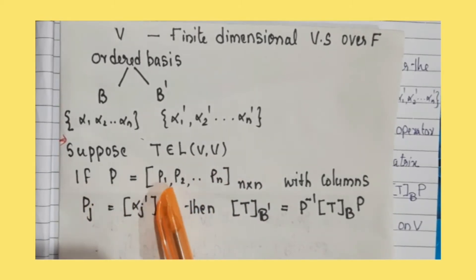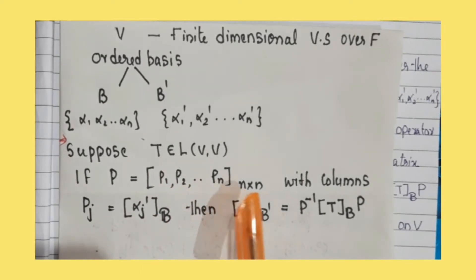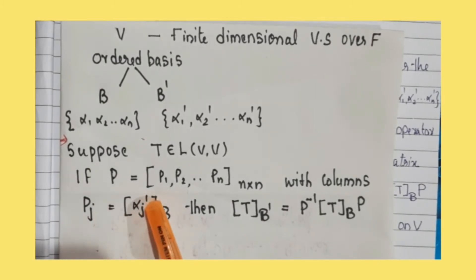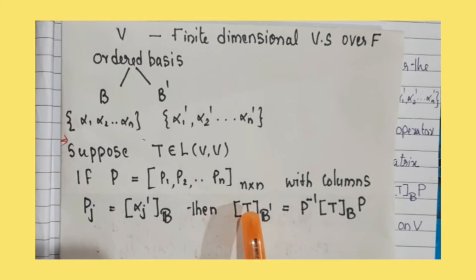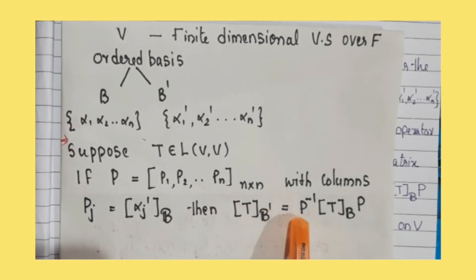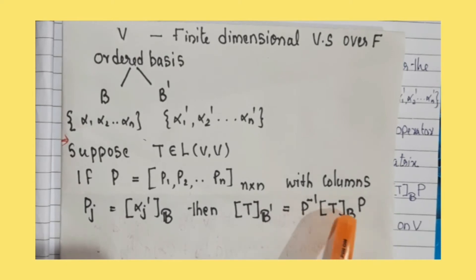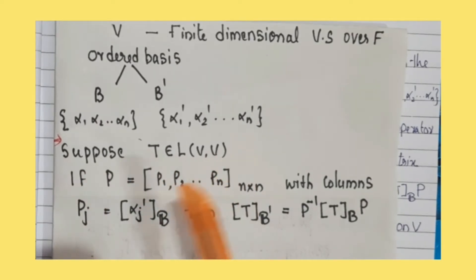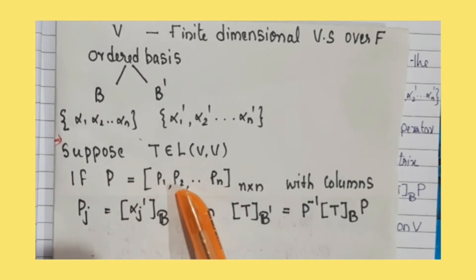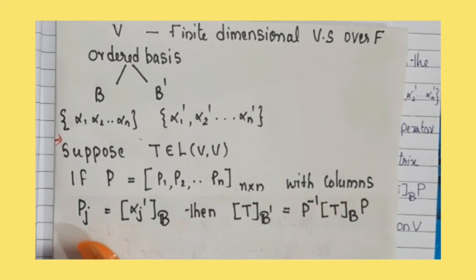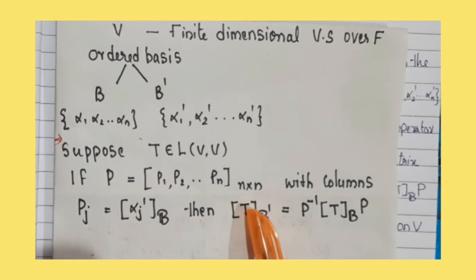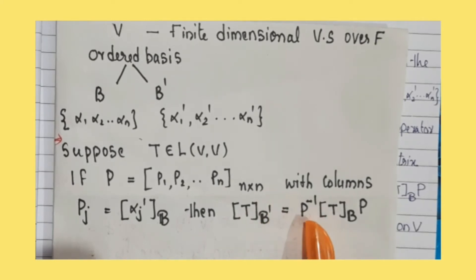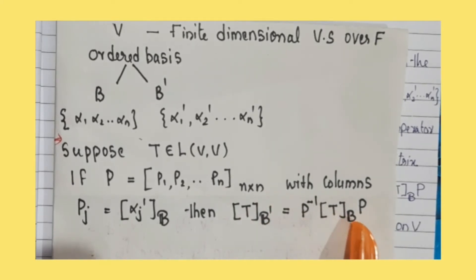If P equals matrix [P1, P2, ..., Pn] is an n by n matrix with columns Pj equal to the matrix of alpha j' related to B, then the matrix of T related to B' is equal to P inverse times the matrix of T related to B, times P.